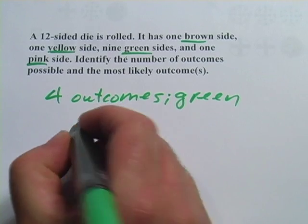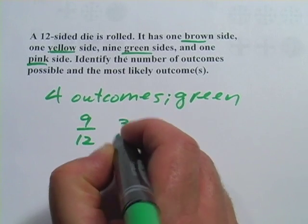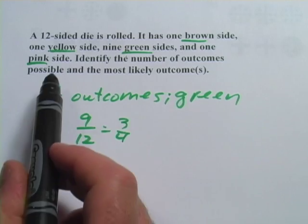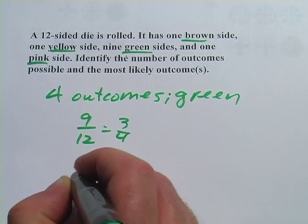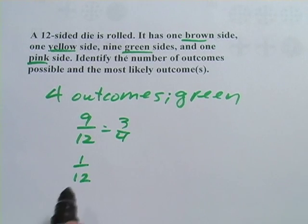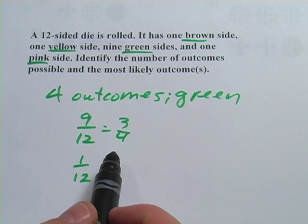The odds of getting green are 9 out of 12, which is 3 out of 4. And the odds of getting the brown, the pink, or the yellow are just 1 out of 12 for each of them. So this is definitely a much more likely outcome.